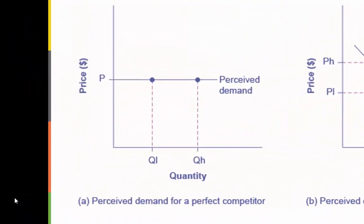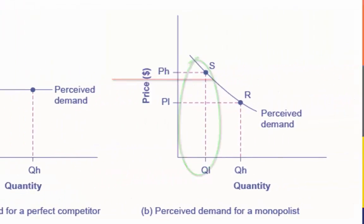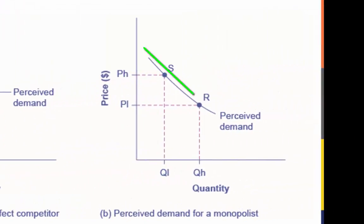A perfectly competitive firm is a price-taker and perceives the demand curve that it faces to be flat. The flat shape means that the firm can sell either a low quantity or a high quantity at exactly the same price. A monopolist is a price-maker and perceives the demand curve that it faces to be the same as the market demand curve, which for most goods is downward sloping.